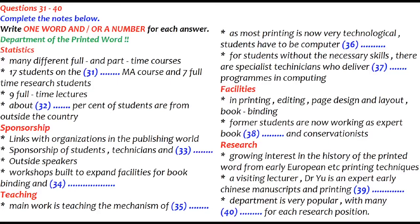Some statistics to start with. The first intake of undergraduate students consisted of 20 students, which rose to 37 in the second year. And we now have about 50 in the first year, doing a wide range of courses full and part-time. We have a thriving research department, with 17 students on the taught MA course and 7 students doing research full-time.